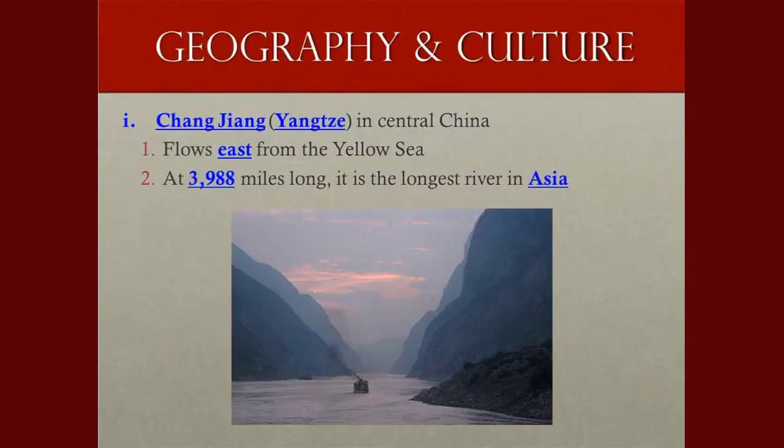Another river system is the Yangtze, or Changjiang, which is in central China. It flows east toward the Yellow Sea and is about 3,988 miles long. It is the longest river in Asia.